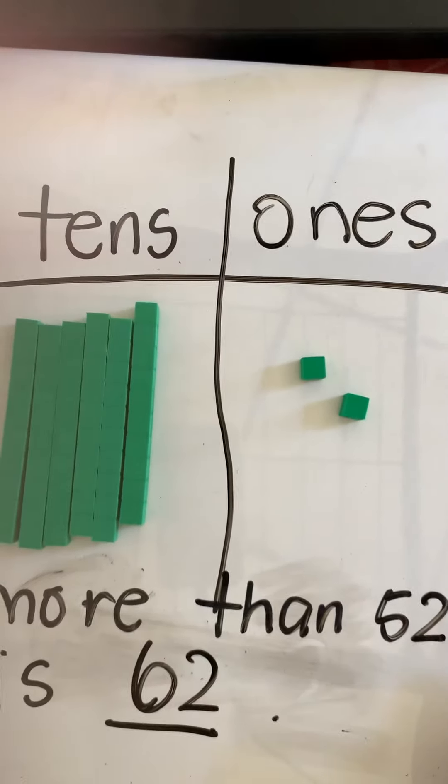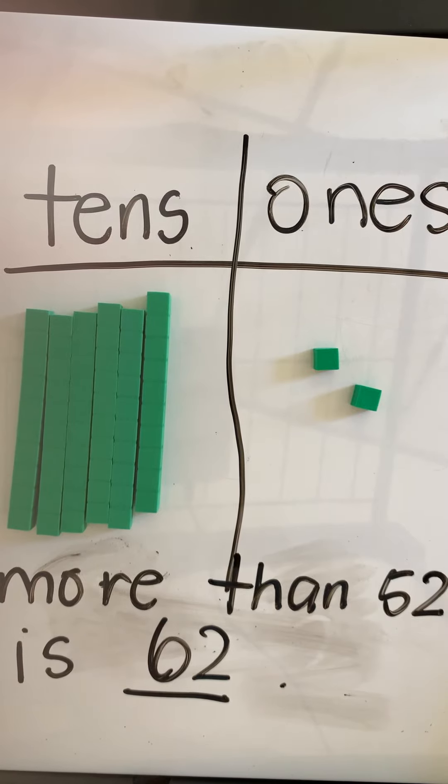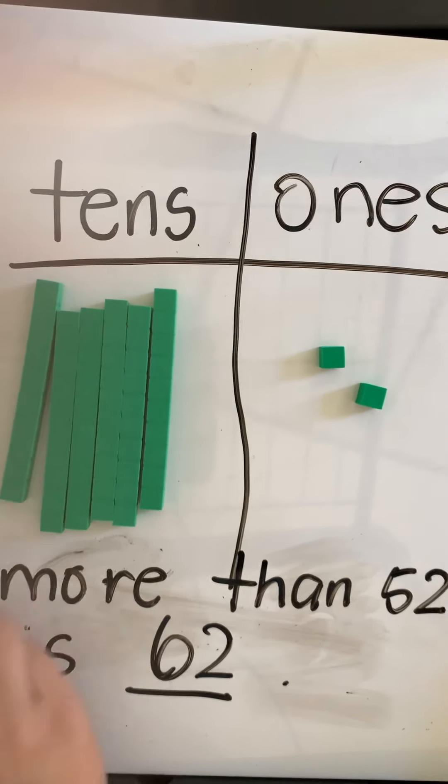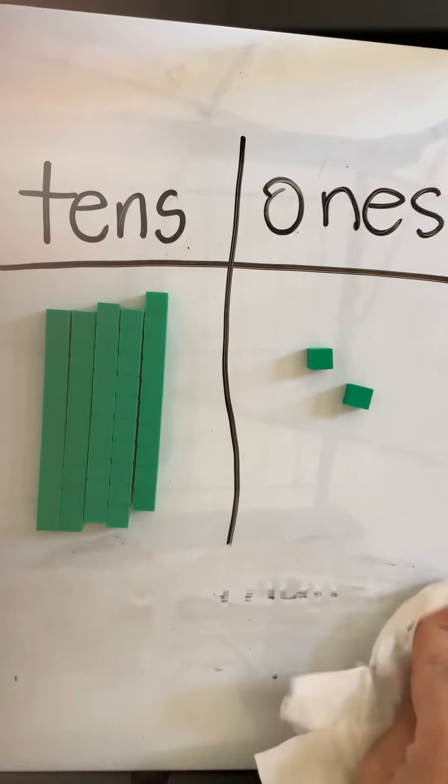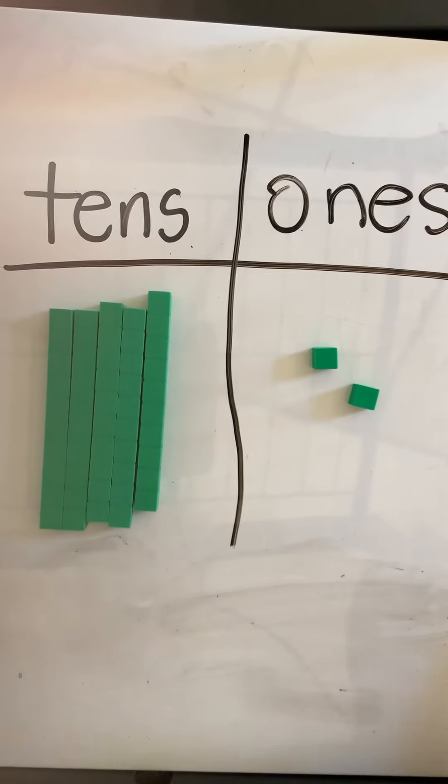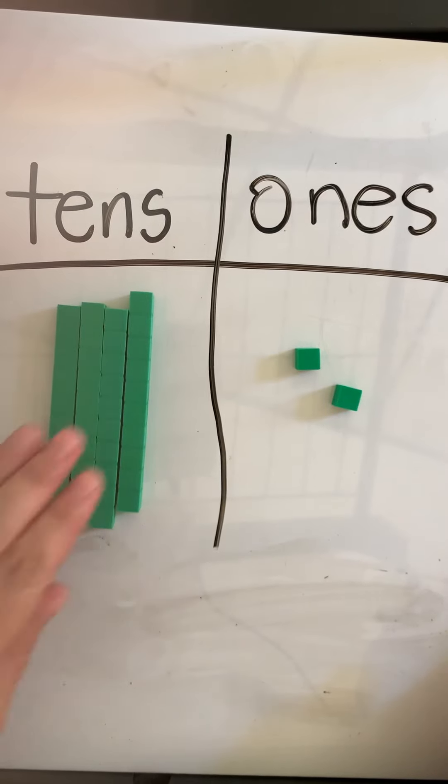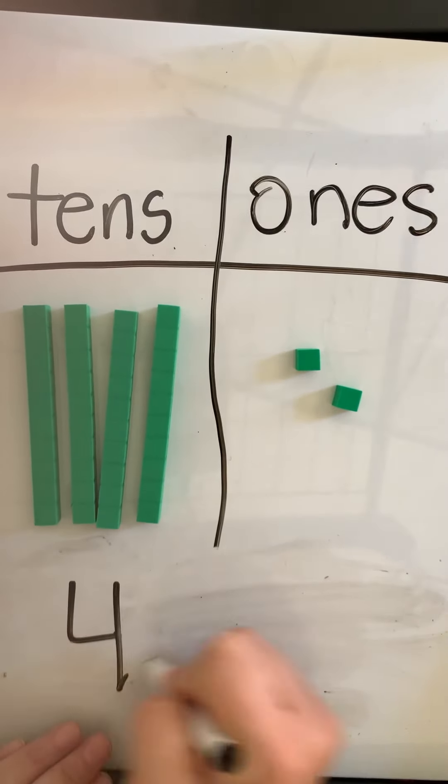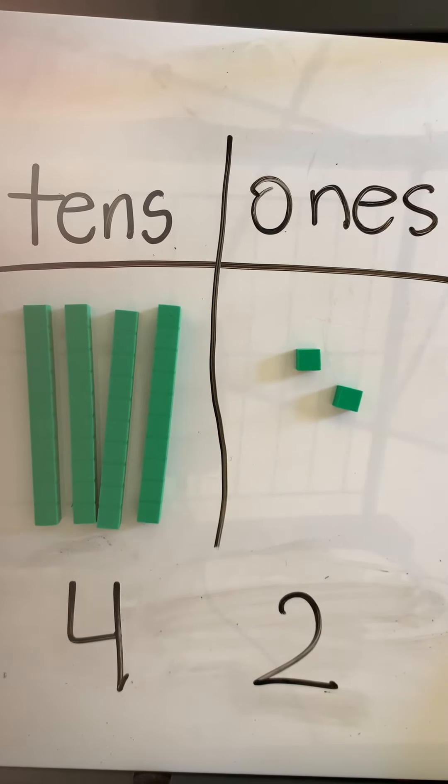We're only changing the column tens. Now if I wanted to have 10 less than 52, let's go back to 52 and see what we get. So I'm going to take away one of my tens for my number to get smaller. So now instead of 52, I will have 42. The ones place stayed the same. I only changed my tens place to have 10 more or 10 less.